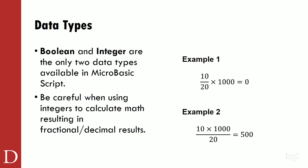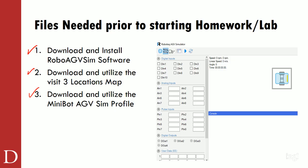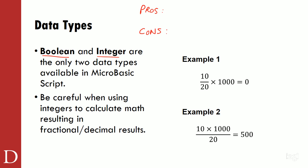One of the things about the MicroBasic programming language is this: we only get two data types — Boolean and integer data types. So there's a question on one of the sheets about pros and cons of that. One of the pros of going down to two data types is that we get faster execution. By having fewer data types, we get faster execution.